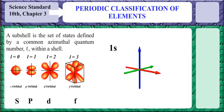Now that we have understood about the shell, let us understand the concept of a subshell. A subshell is the set of states defined by the common azimuthal quantum number L within a shell.